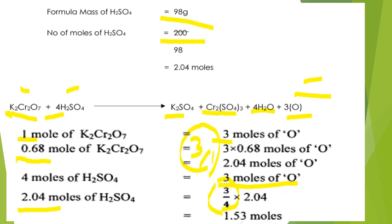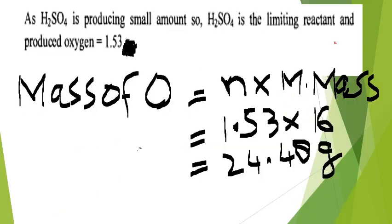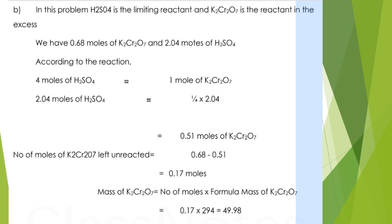Potassium dichromate is the excess reactant. Using the moles produced by the limiting reactant, calculate the mass of oxygen: n × molar mass = 1.53 moles × 16 g/mol = 24.48 grams of oxygen. This is the mass of atomic oxygen produced in the reaction.